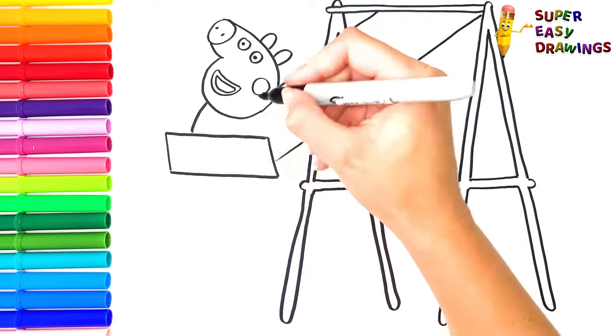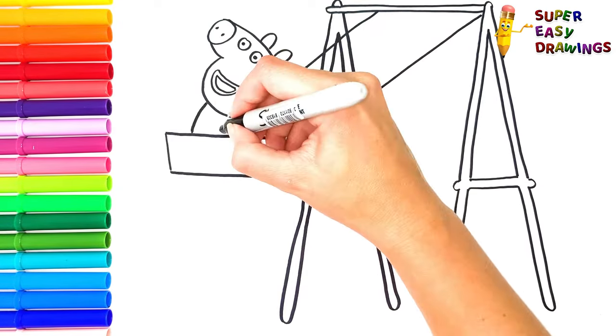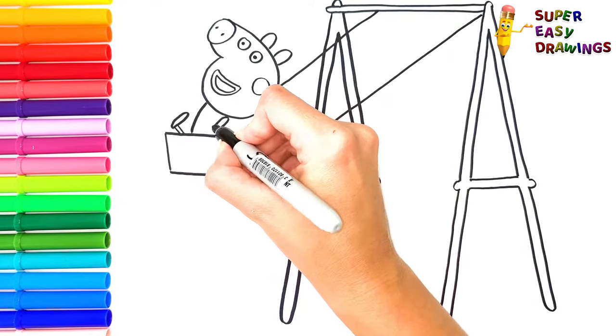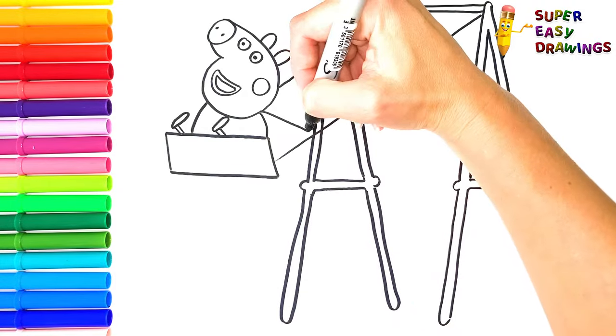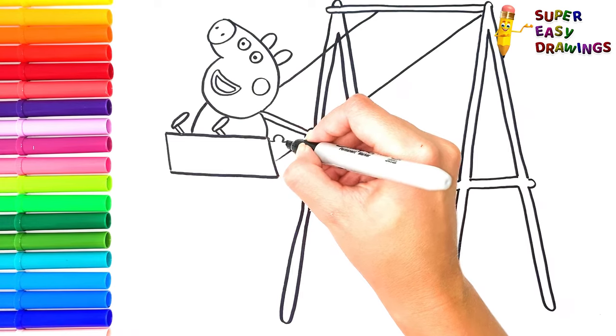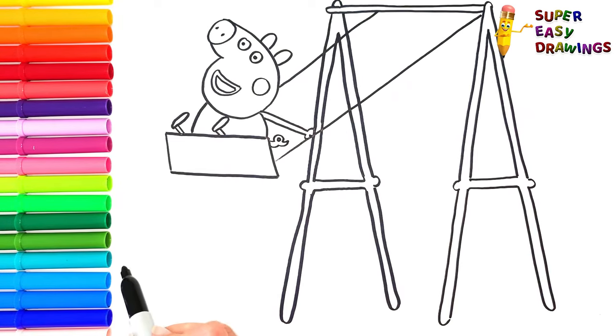Now I draw her body. Her legs. Her arm with which she clings. And her cute tail. Lastly, I draw a line for the ground.